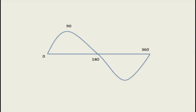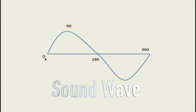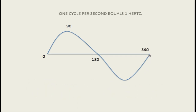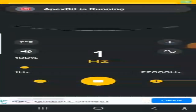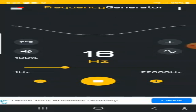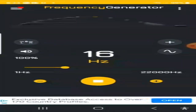A frequency is basically a sine wave going from zero degrees right up to 360 degrees. One cycle represents a frequency of one cycle per second, which is called one hertz. This is a sine wave of one hertz, or one cycle per second. This is a sine wave of 16 hertz, or 16 cycles per second.